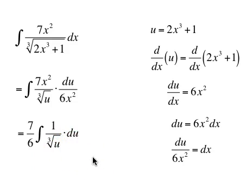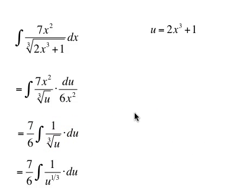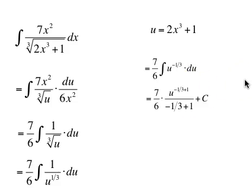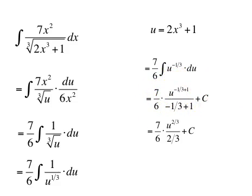To use the power rule for antiderivatives, we need to express this as a power. 1 over the cube root of u is 1 over u to the 1/3 power, which is the same as u to the negative 1/3. Using the antiderivative rule — x to the n gives x to the n plus 1 over n plus 1 — that will be u to the negative 1/3 plus 1 over negative 1/3 plus 1. Negative 1/3 plus 1 is 2/3, so we get 7/6 times u to the 2/3 over 2/3 plus c.